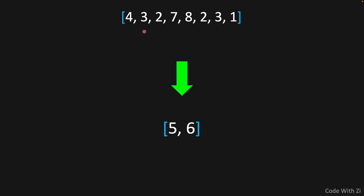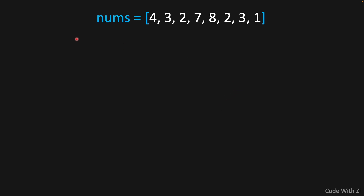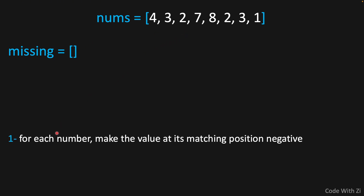For example, if this is the array, we have to return five and six, because five and six do not appear here, even though they are in the range of 1 to 8, which is the length of our array. Because five and six do not appear here, we have to return them inside of an array as our missing numbers. So now let's see how we can solve this. We only need one simple thing: a variable called missing, which is the array we're going to return at the end.